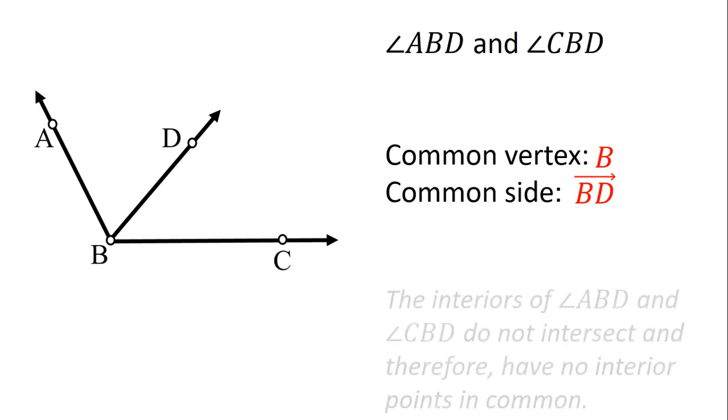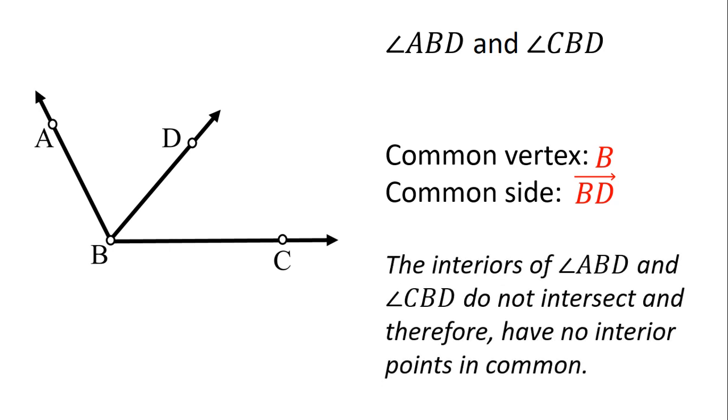And how about the interiors of angle ABD and angle CBD? So the interiors of the two angles do not intersect. So wala silang common points. So ito ang characteristics ng Adjacent Angles. So dapat merong common vertex, may common side, at yung interiors nila ay hindi nag-intersect. O wala silang common points.